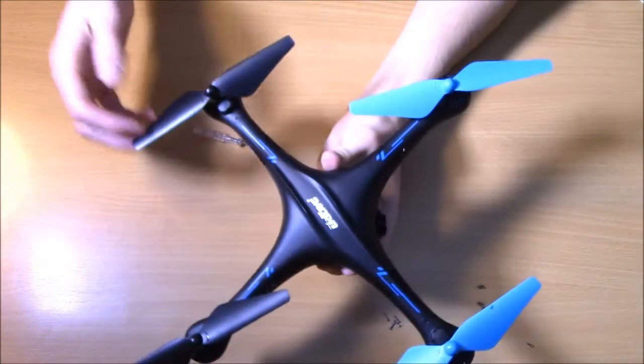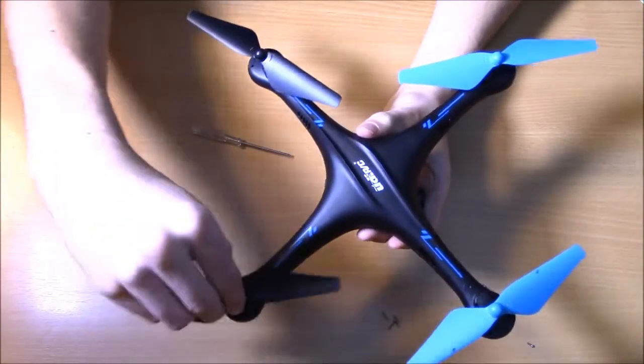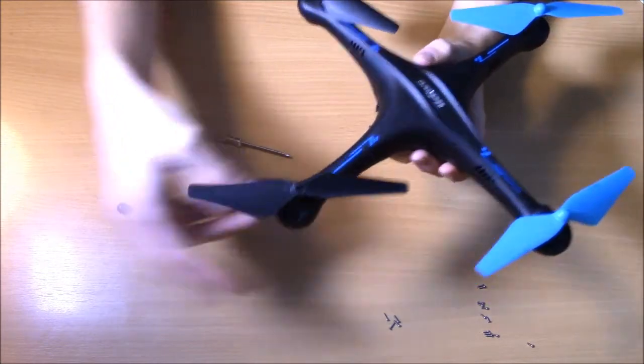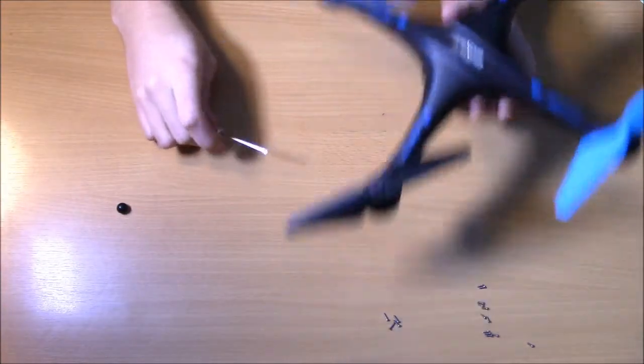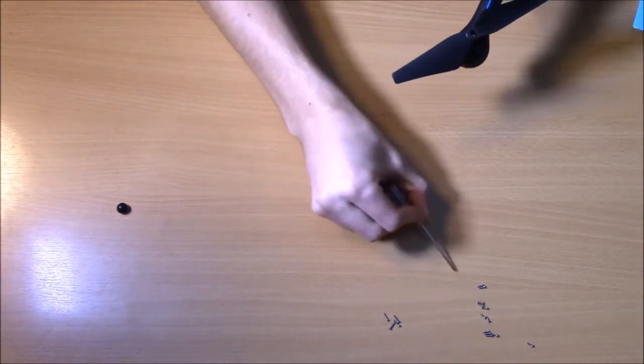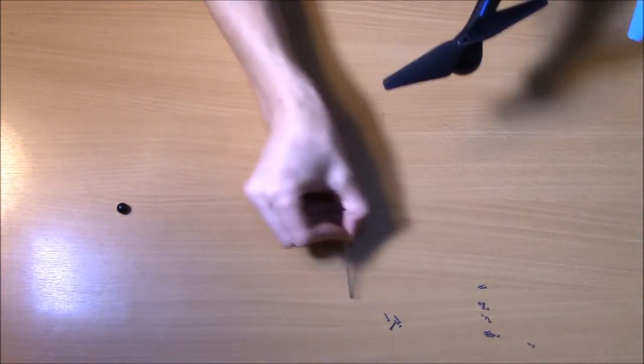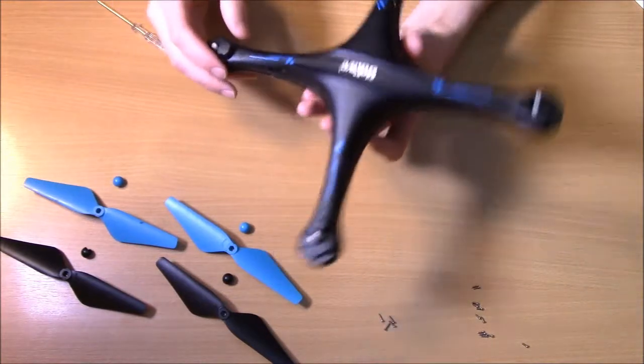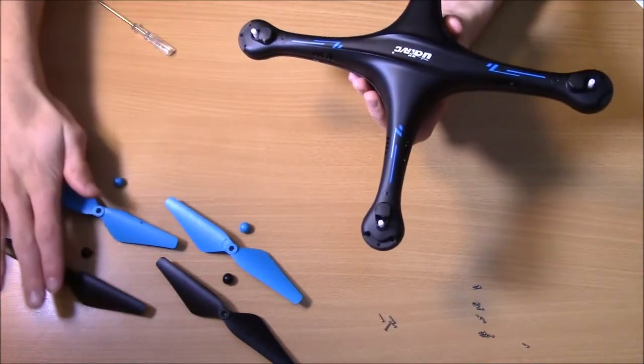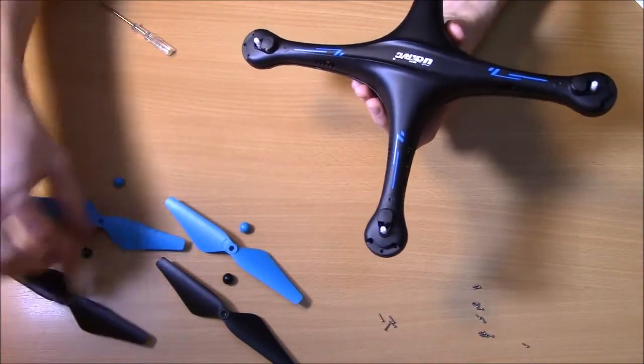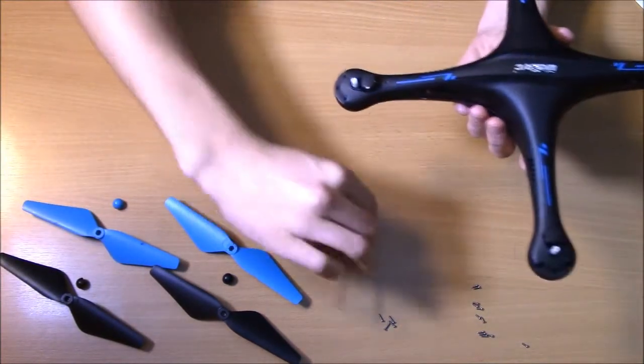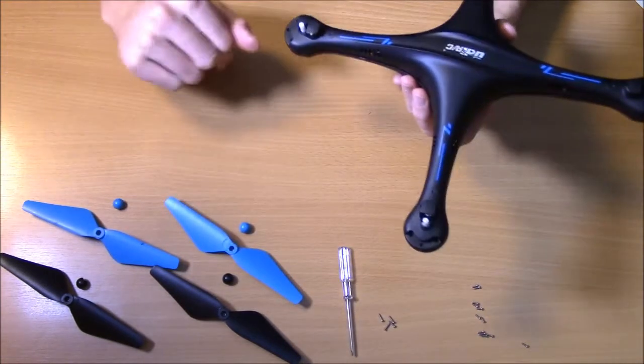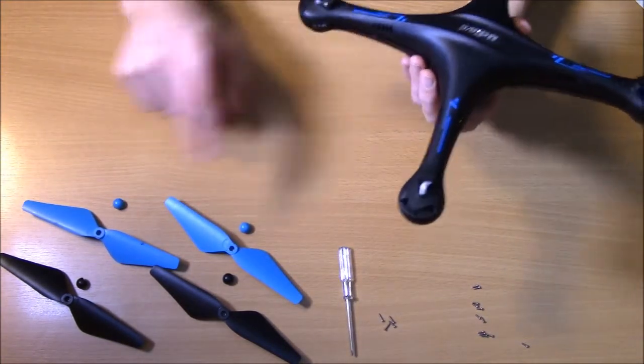So once you get all those screws out, you're also going to want to take off the propellers. If you have seen my propeller replacement video using this exact drone, you'll see you take off the propeller and then there's a little screw in there. I have my little piles here. You're going to want to make sure to keep these separate because they are different lengths. The nice part about these is you can just keep the screws inside them so you don't have to worry about that.